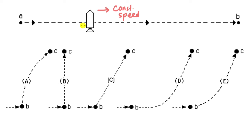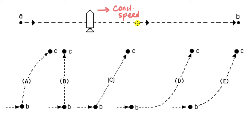Here we have a rocket which is moving with a constant speed, just drifting through space from point A to point B. There are no external forces acting on the rocket — it's just gliding to the right with a constant speed.